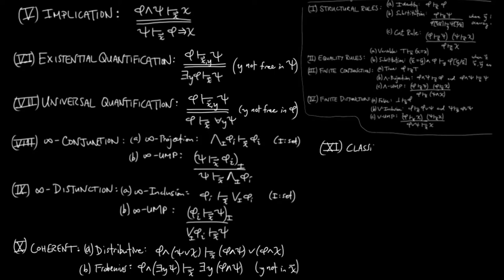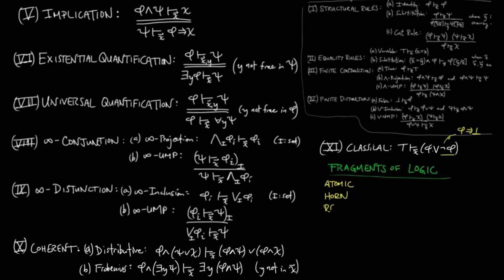Eleventh, we have the classical first-order logic axiom: 'true entails phi or not phi in the context of x.' This is the law of excluded middle.